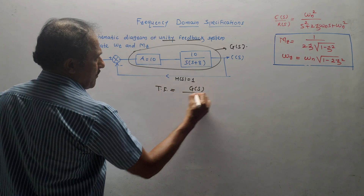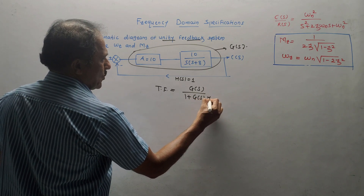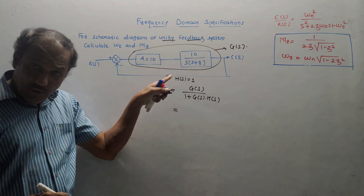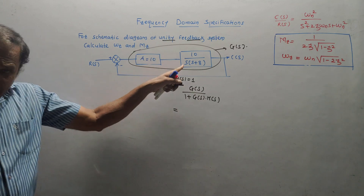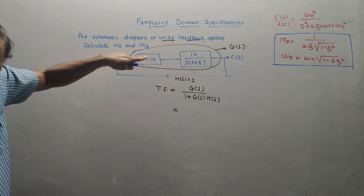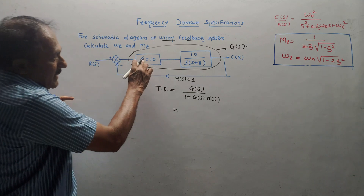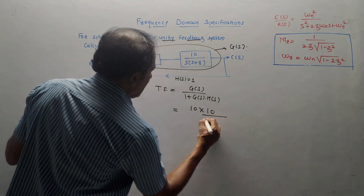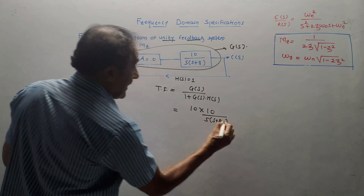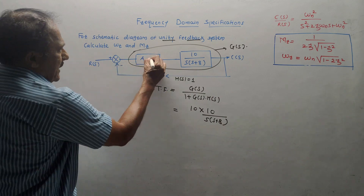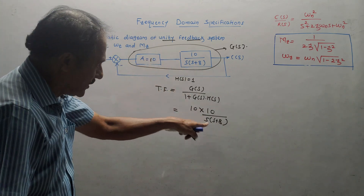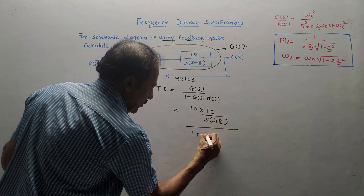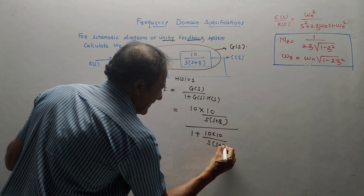The transfer function is G(s) upon 1 + G(s)·H(s). G(s) is the product of the two cascade blocks: 10 × [10 / s(s+A)] = 100 / s(s+8), since A = 10 gives value 8. So the transfer function is [100/s(s+8)] divided by [1 + 100/s(s+8)], with H(s) = 1.